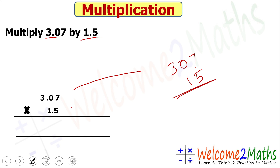So we have 307 and 15. The method is: first do the multiplication without the decimal point, then count the decimal places and put the decimal point. So first: 5 into 7 is 35 — write 5, carry 3. Then 5 into 0 is 0, plus carry 3 is 3. Then 5 into 3 is 15 — write 15. So the first partial product is 1535.